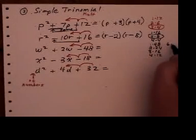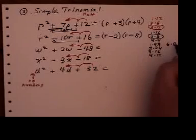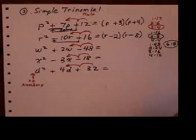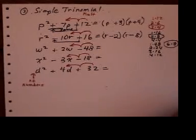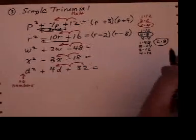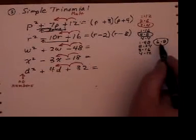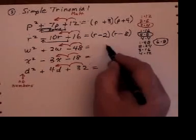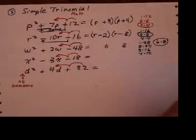5 doesn't work. 6 goes into 48 8 times. And you can see that 6 times 8 actually does multiply to make 48. And the 2 of them subtract to make 2. So I've got my answer. It's 6 and 8.